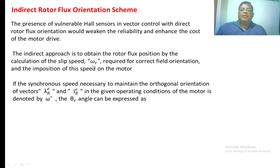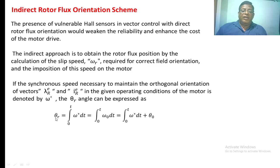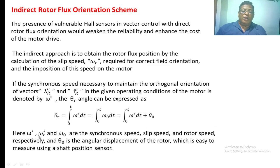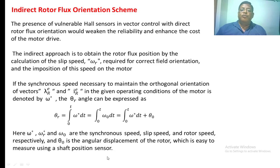We know the slip speed, and if we add the actual speed of the induction motor to the slip speed, we get the synchronous speed, represented as omega_star. The angle theta_r can be calculated as: theta_r = integral from 0 to t of omega_star dt, equal to the integral of (omega_r_star + omega_naught) dt, where omega_r_star is the reference slip speed and omega_naught is the speed of the induction motor. Theta_naught is the angular displacement of the rotor, which can be easily measured with the help of a shaft position sensor.